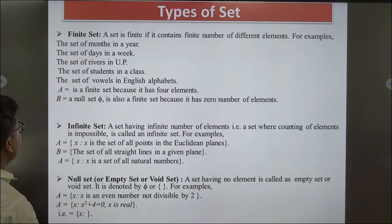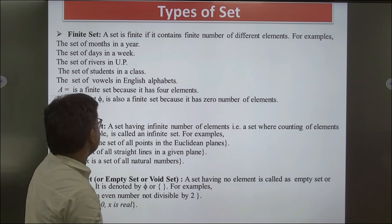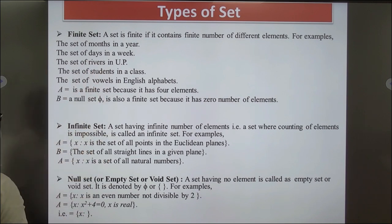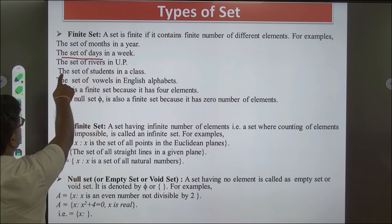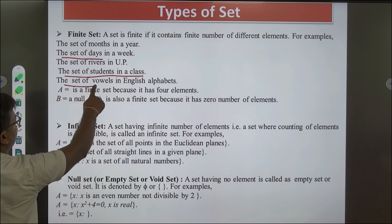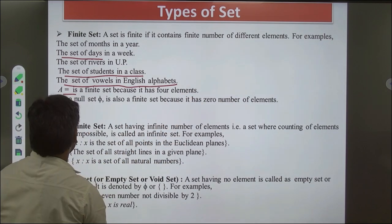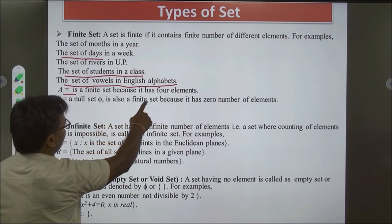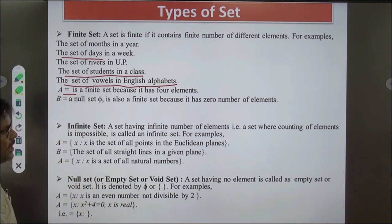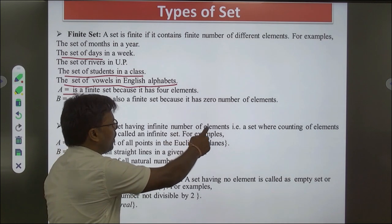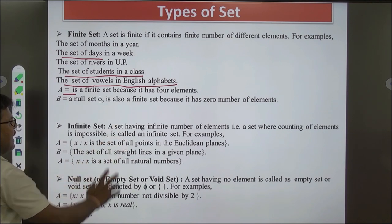Finite Set: A set is finite if it contains a finite number of different elements. For example: the set of months in a year, the set of all days in a week, the set of rivers in UP, the set of all students in a class, the set of vowels in the English alphabet. Infinite Set: A set having infinite number of elements — where counting of elements is impossible — is called an infinite set. For example, A = {x : x is the set of all points in the Euclidean plane}, B = the set of straight lines in a given plane, A = {x : x is a natural number}.